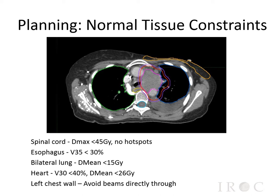For example, the spinal cord maximum dose should be less than 45 gray, with general instructions to the dosimetrist to avoid hot spots within the spinal cord. In addition, volumetric constraints are used for both the esophagus and the heart. For example, the heart V30, or the volume of the heart receiving 30 gray, should be less than 40%, with a mean dose of the heart less than 26 gray. The more instructions that are provided to the dosimetrist, the easier it will be for them to initiate a plan in keeping with the radiation oncologist's preferences.